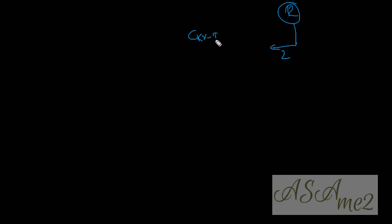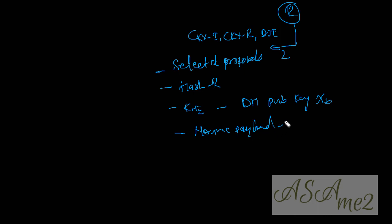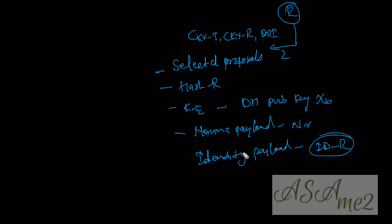Once the responder has calculated all of that, it sends the second packet, which contains: initiator cookie and responder cookie; domain of interpretation; the selected proposals; the responder hash (Hash_R); the key exchange payload with Diffie-Hellman public key XB; the nonce payload containing the responder nonce; and the identity payload containing the responder's identity.